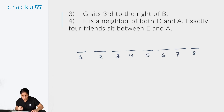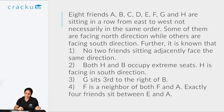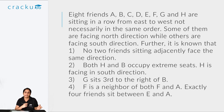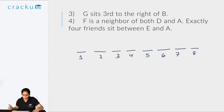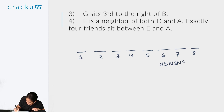The first clue is that no two friends who sit adjacent to each other face the same direction. Since there are 8 people, this means people alternatively seated are facing north or south. That gives us two basic configurations: either N-S-N-S-N-S-N-S, or S-N-S-N-S-N-S-N.